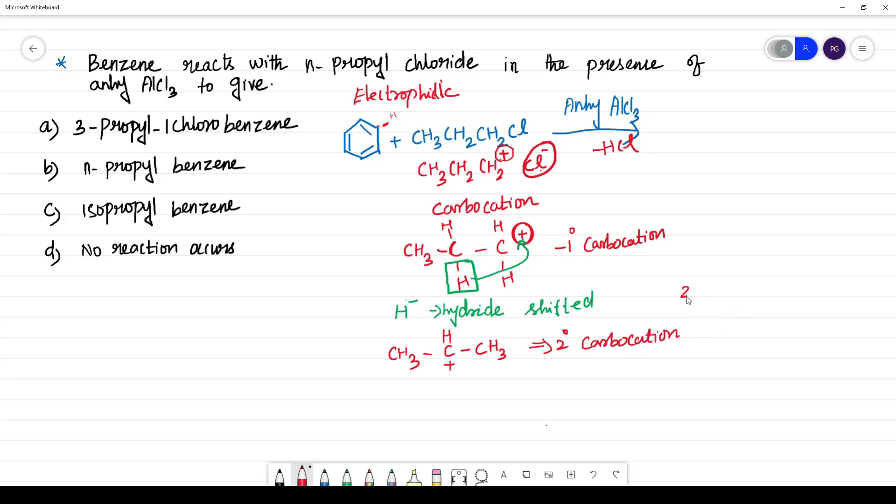So we know that secondary carbocation is more stable than primary carbocation. So what happens? There will be a hydride shift and this product will attack this H minus. So what we will be getting?